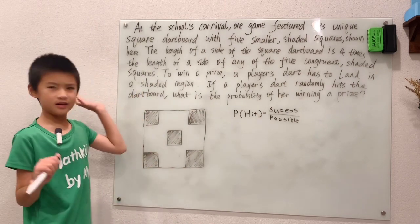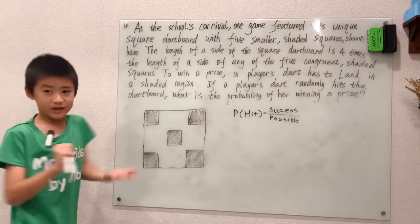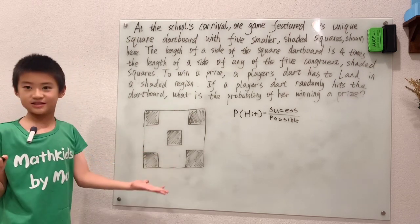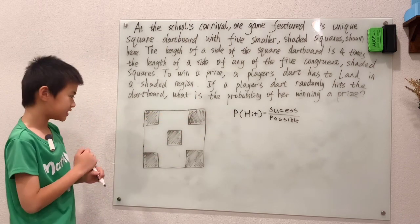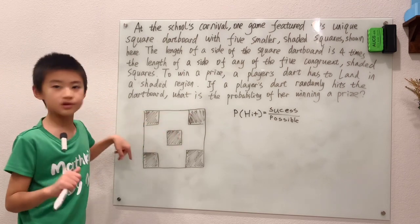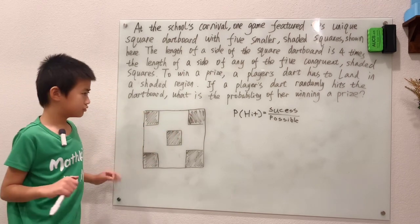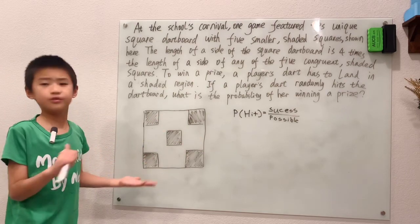Wait a minute. Number of points in this grid? There's infinite points in this grid, right? And the same with the successes. There are infinite points in each one of these five shaded regions. So if we just do this, the probability will be infinite out of infinite, and that's just one.